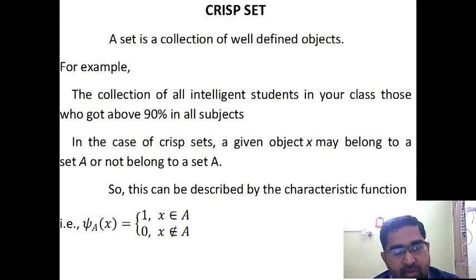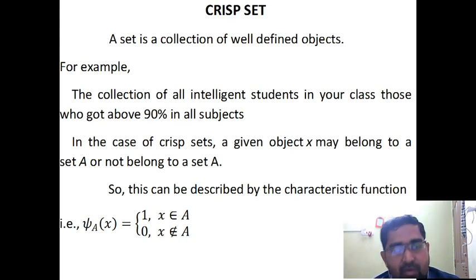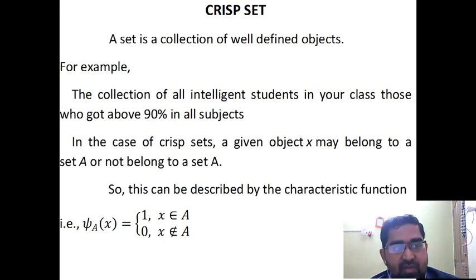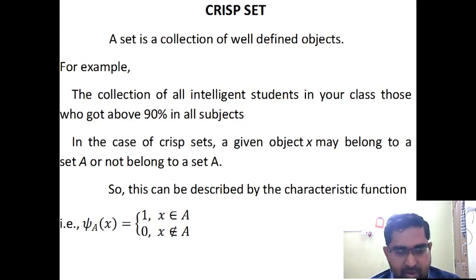So many sets are there, we know. In the case of a Crisp Set, a given object x may belong to set A or not belong to set A. We have only two chances. So it can be described by the characteristic function, which is equal to 1 if the element is present, otherwise 0.